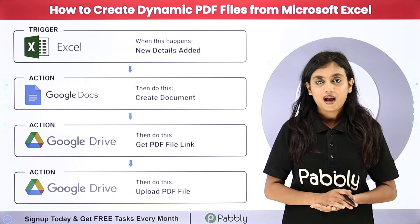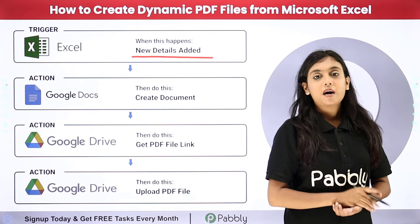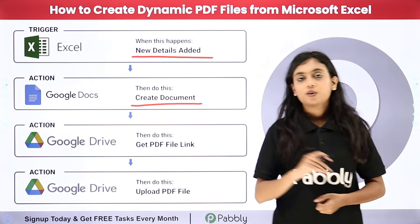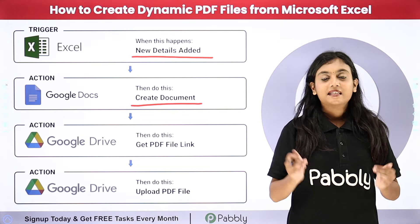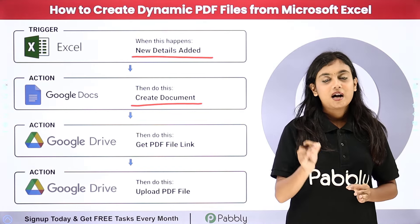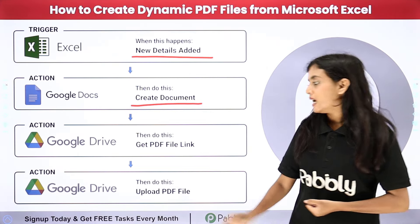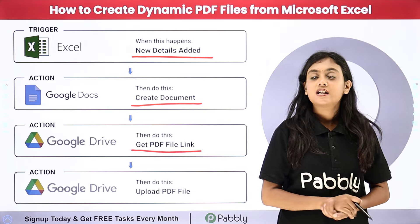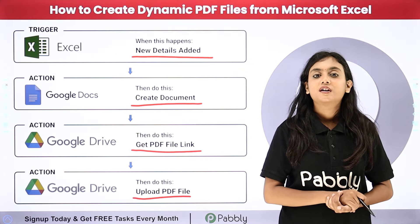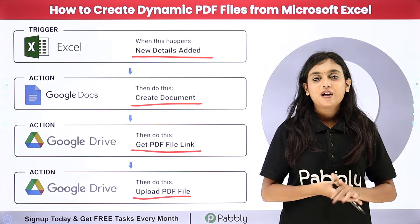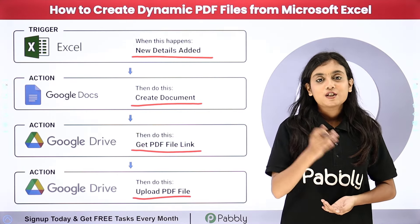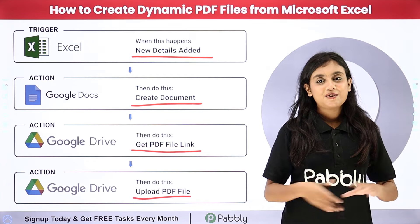In this automation, as soon as I enter the details of my participants in my Microsoft Excel worksheet, automatically the letter of participation document is going to be created using Google Docs — with the help of a template already created in Google Docs. Then, with the help of Google Drive, we are going to receive the PDF file link of that document and upload it into a folder we have already created in our Google Drive.